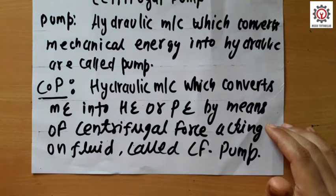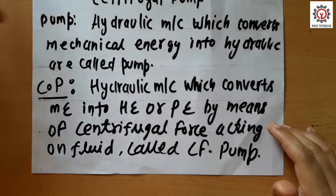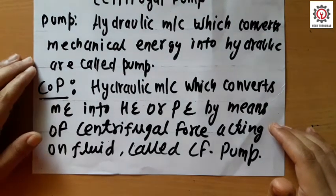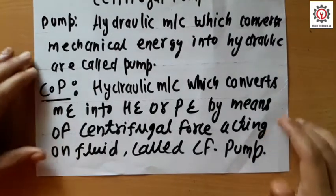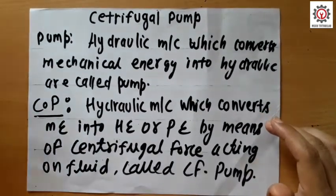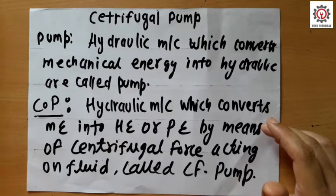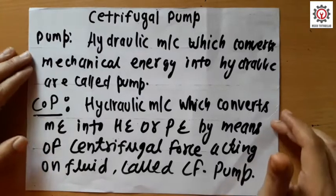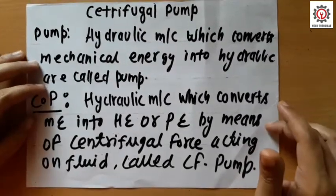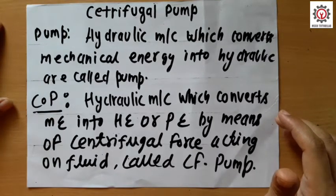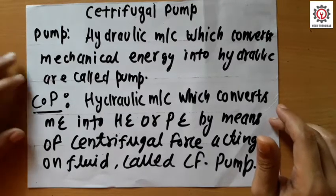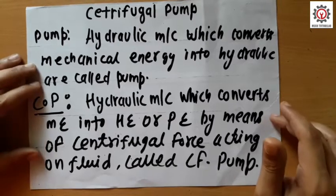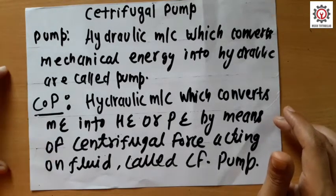When we apply centrifugal force on a fluid, its pressure energy increases. We need to increase the pressure energy of the fluid because the centrifugal pump is a device which is used to deliver fluid from low head to high head — that is, from low pressure energy to high pressure energy. A common use is in agriculture, where farmers use the centrifugal pump to deliver water from low head to high head for their fields.